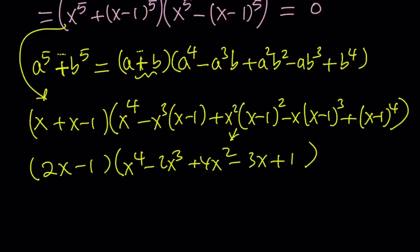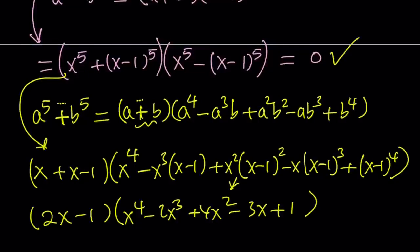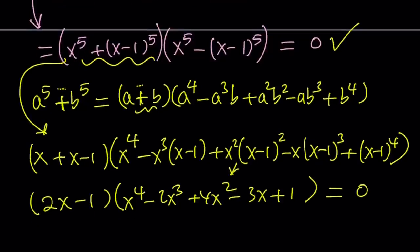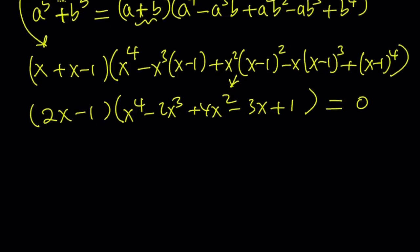Let's simplify this a little bit. And to keep a long story short, the first one is going to be 2x minus one, and the second factor is going to be x to the fourth minus 2x cubed plus 4x squared minus 3x plus one. So by setting the first factor equal to zero, we get the obvious solution x equals one half. And I'm pretty sure as soon as you saw this problem, you thought of one half, right?